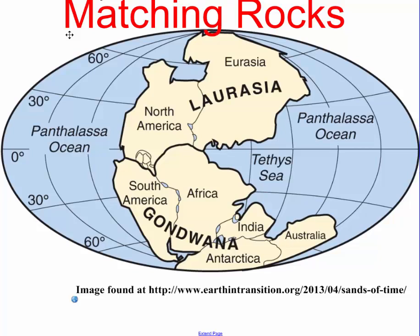He also found matching rocks. The rocks on one continent — in South America, for instance — had the exact same types of layering that you would find in Africa. He noticed this all over the place, and thought it was very convenient that the rocks would match. The only way that could happen is if the continents were at one point together and then broke apart.